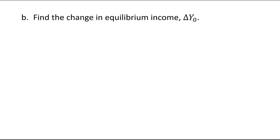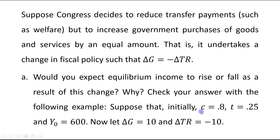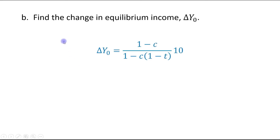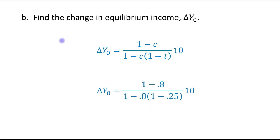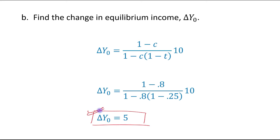Part B: find the change in equilibrium level of income. We arrived at this equation in part one. Given that MPC is 0.8 and tax rate is 0.25, we incorporate these values: change in equilibrium income equals (1 − 0.8) divided by (1 − 0.8 × (1 − 0.25)), times 10. When you solve this equation, the final answer is that change in equilibrium level of income is 5.